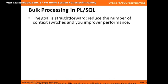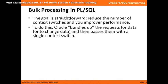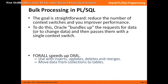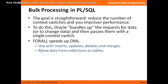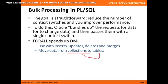The goal is straightforward: reduce the number of context switches and you improve performance. Oracle bundles up those requests and passes them over with a single context switch. We use FORALL with inserts, updates, deletes, and merges — though merges are generally not that fast with FORALL, so mostly inserts, updates, and deletes. The bottom line is that you're moving from collections to tables. Collections are Oracle's array-like structures, and they're critical for you to know about.